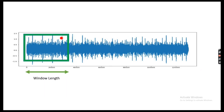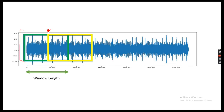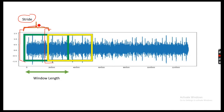After taking the first window, I slide this window forward — that's why it's called the sliding window method. The window moves along the signal, and the amount it jumps each step is called the stride. You can change the value of the stride; if you increase it, you will have fewer training samples.